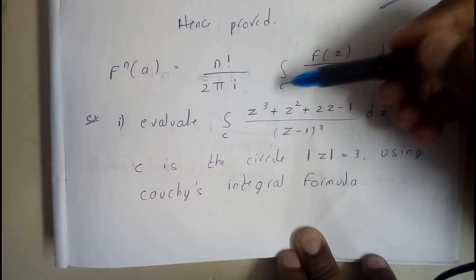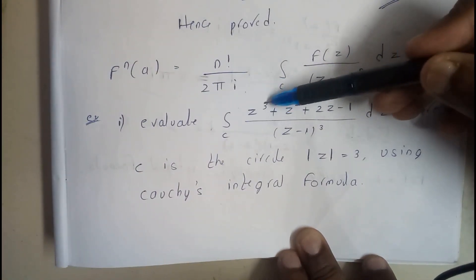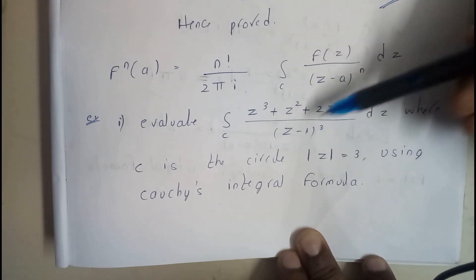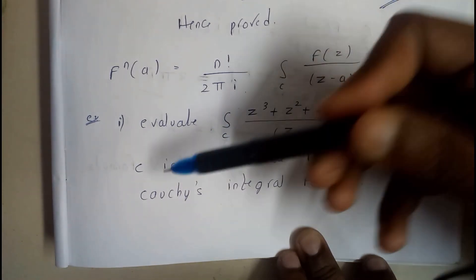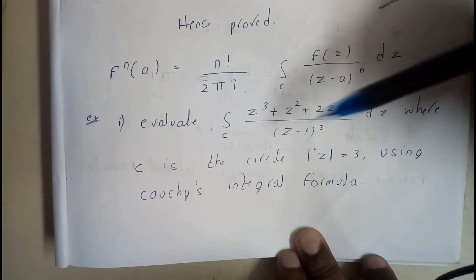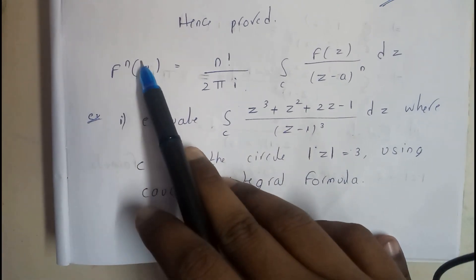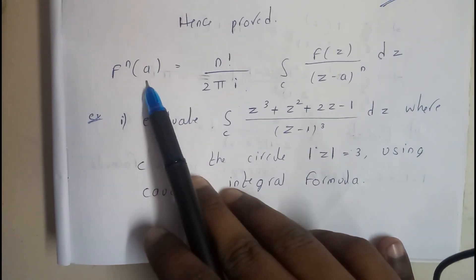So here there is a question given: integral over C of (z³ + z² + 2z - 1)/(z - 1)³ dz, where C is the circle |z| = 3, using Cauchy's integral formula. So we know the basic formula is f^(n)(a) =